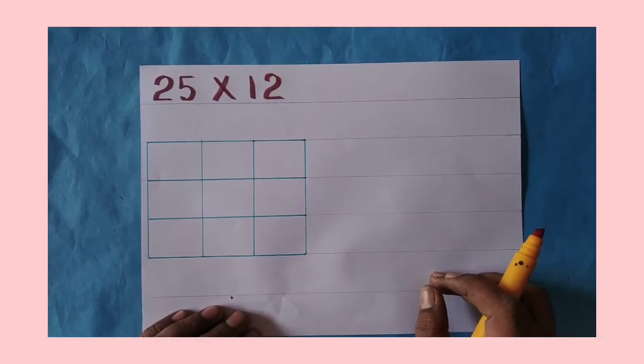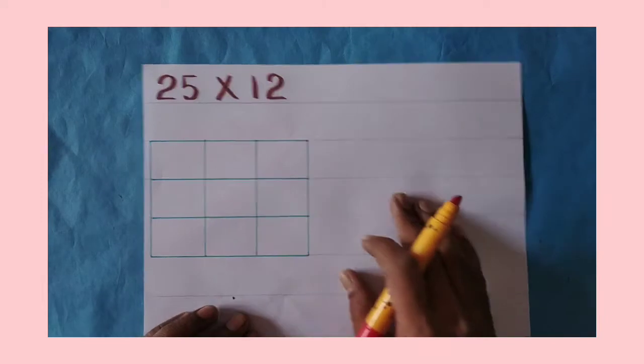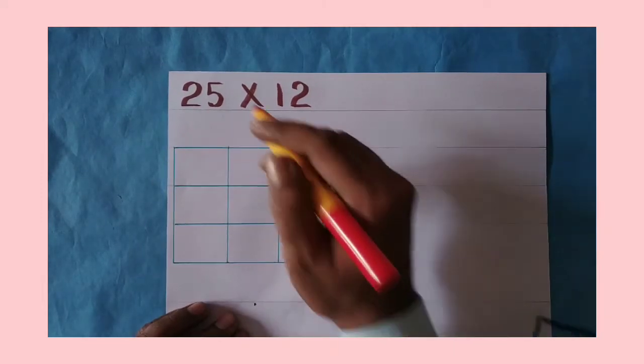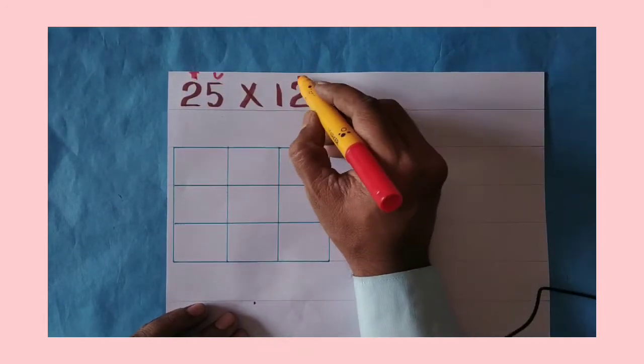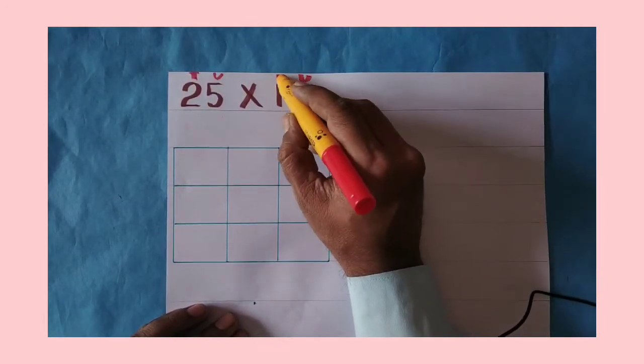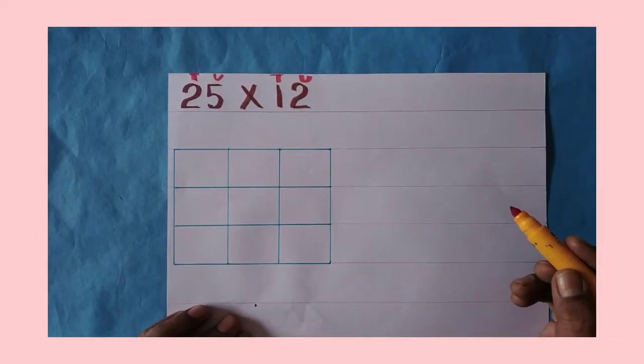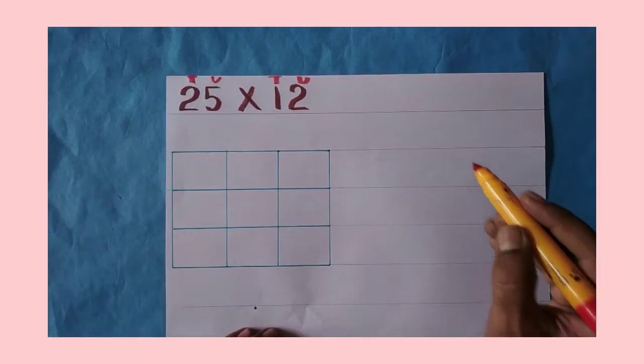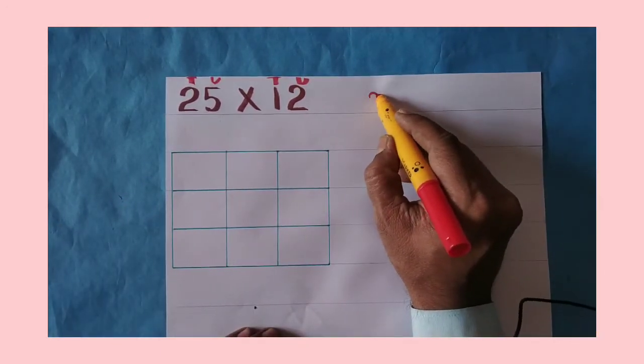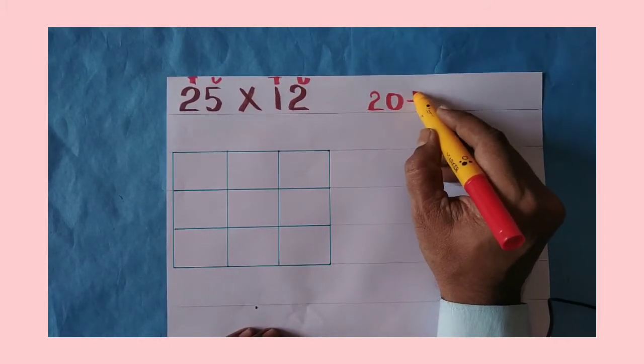Now we are going to do multiplication of two-digit number by two-digit number. Two-digit means unit place and tens place by lattice method. So, what do we need to do? Twenty-five is the first number. We need to split it.